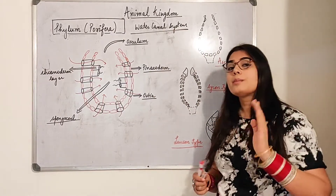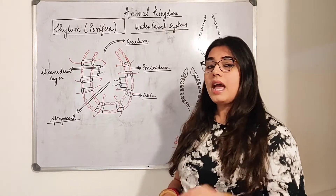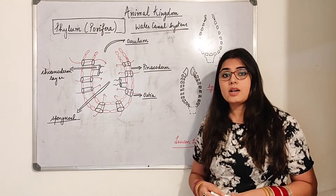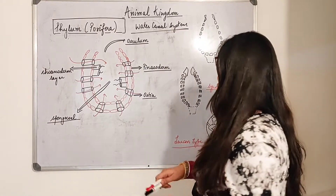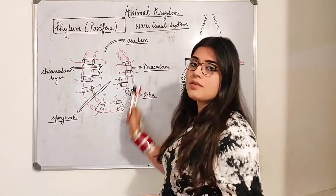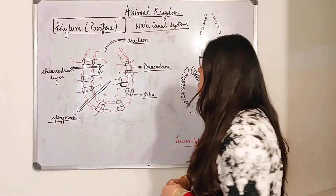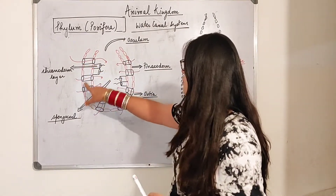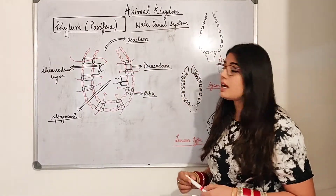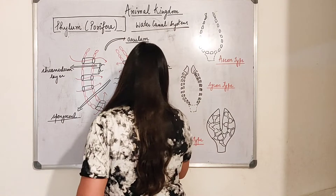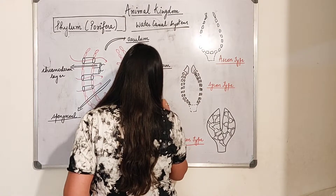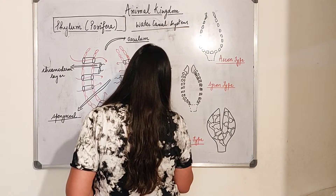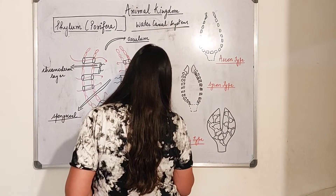In the last video I told you that Porifera basically have pores on their body. These small pores on their body are known as ostia — they are called ostia. This is the simplest water canal system which I have already drawn for you. These ostia are present all over the body; these black structures which I have drawn refer to the ostia — these are the pores through which the water goes inside.